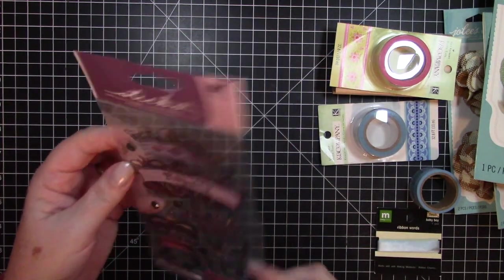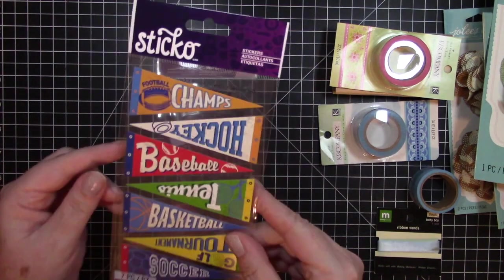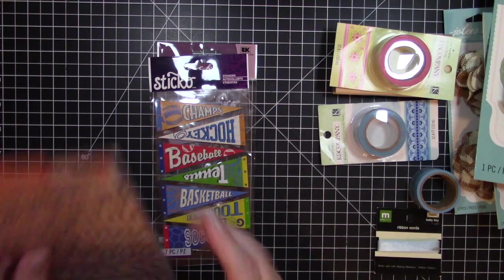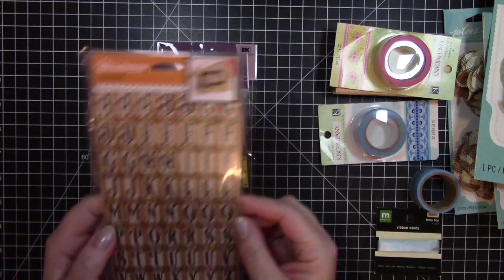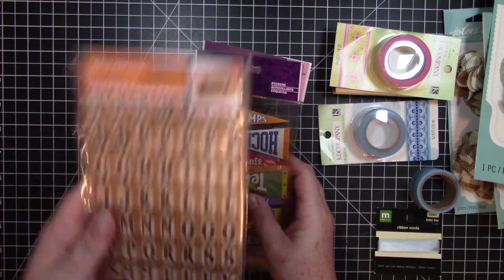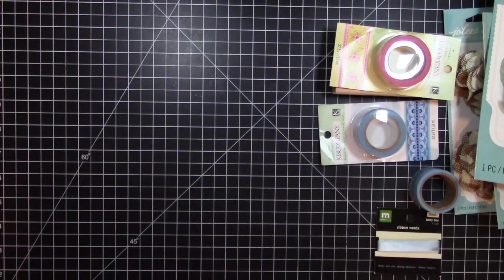Some making memories ribbon words, baby boy, another spool of this American crafts ribbon, a really big Jolie's Boutique flower. Some more Sticko stickers. I've had a lot of these same packs before from a big mystery pack that I had gotten in the past. These are Jolie's Boutique Halloween stickers. And then those two packs of stickers.